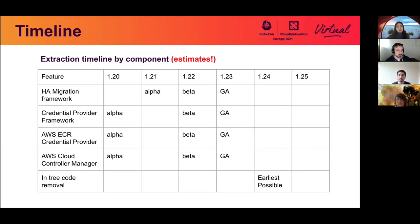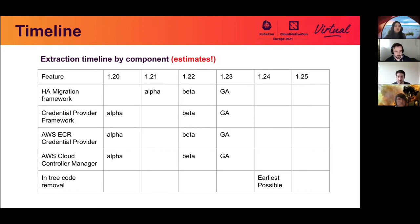The first feature on the timeline is the HA migration framework, which was just merged in 1.21 in alpha state. This allows HA clusters to migrate from running just the kube-controller-manager to running both the kube-controller-manager and the cloud controller manager using a migration lock. The plan is for this to go beta in 1.22. Then we have the credential provider framework, which was alpha in 1.20, along with the AWS ECR credential provider. Ideally, both of those along with the AWS cloud controller manager would be beta in 1.22, which would allow all of them to go GA in 1.23.